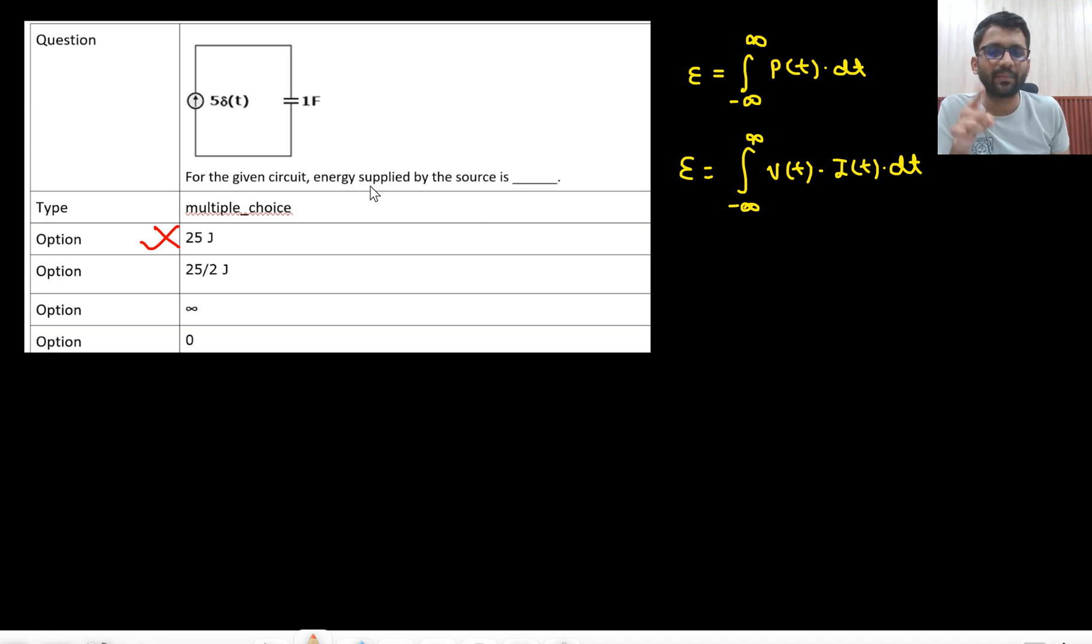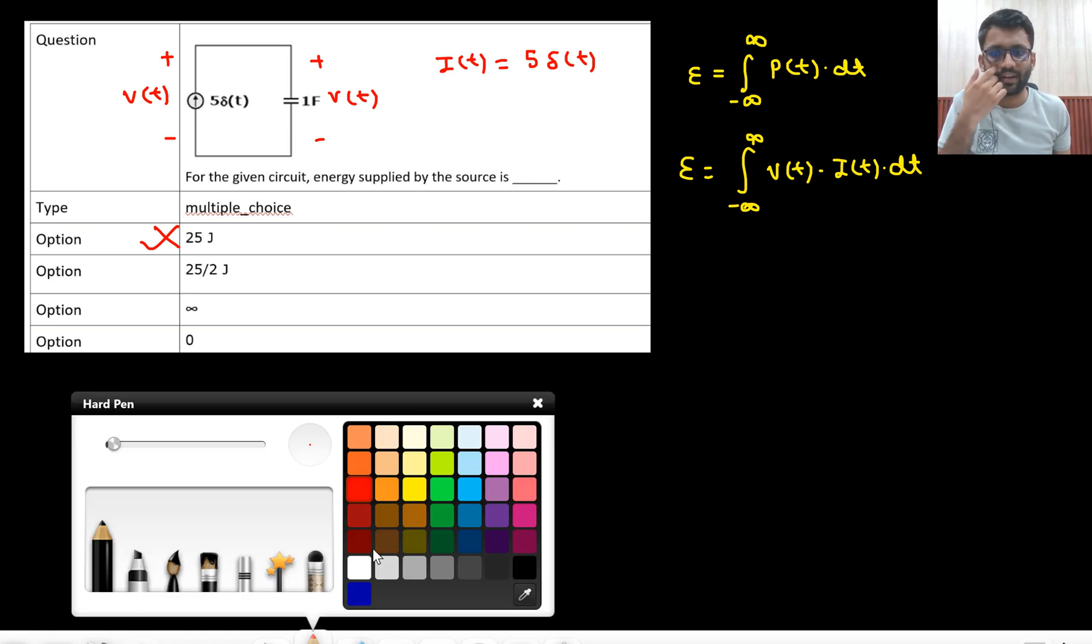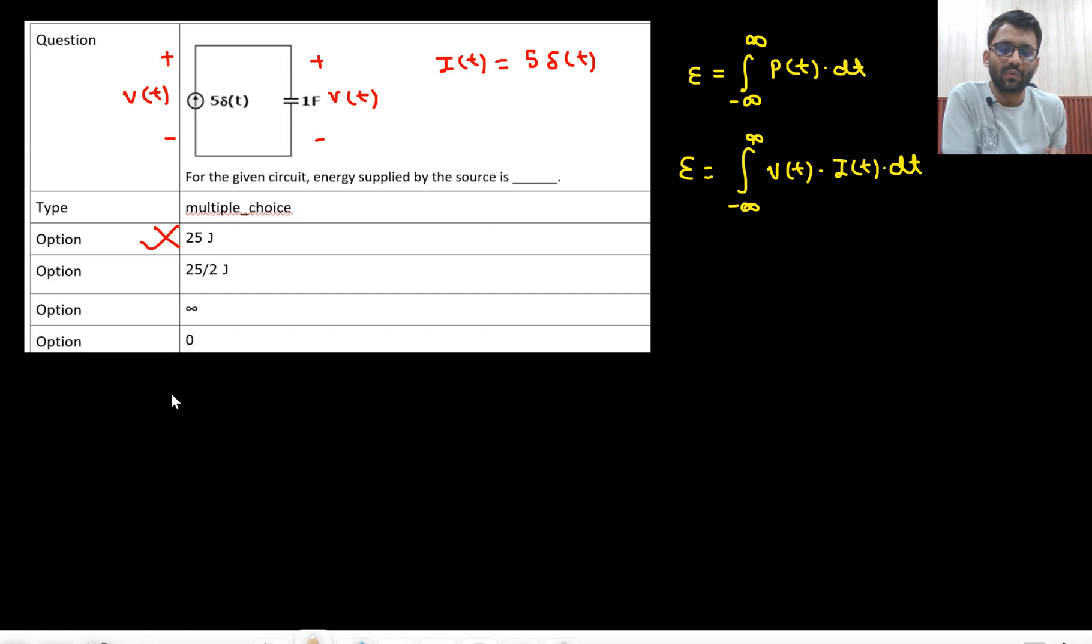Now you need to find the energy supplied by the source, so current you already know, current is 5 delta T. Now you need the voltage. So you will mark this voltage, this is V delta, this is your VT. Now the same voltage is there across the capacitor as well. So whatever the voltage is there across the capacitor, the same voltage will be developed across the current source. So now I can simply find the voltage across the capacitor. Since this is an impulsive current, the capacitor will be charged instantaneously or you can apply the equation as well.